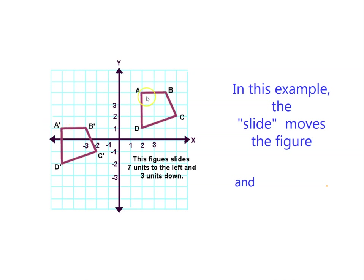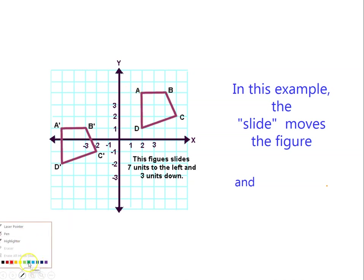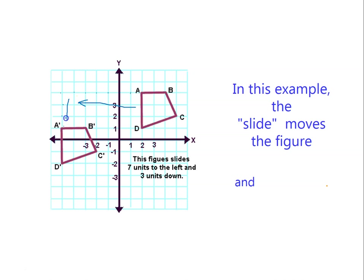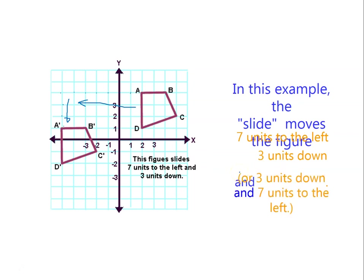So how many units will it move? You can count, or you can count down and then slide. These figures slide first left and then down — seven units to the left and three units down. So it says this figure slides seven units to the left and three units down. You just move that way and then go down by three units — seven units to the left and three units down, or three units down and seven units to the left. Either way, no problem.